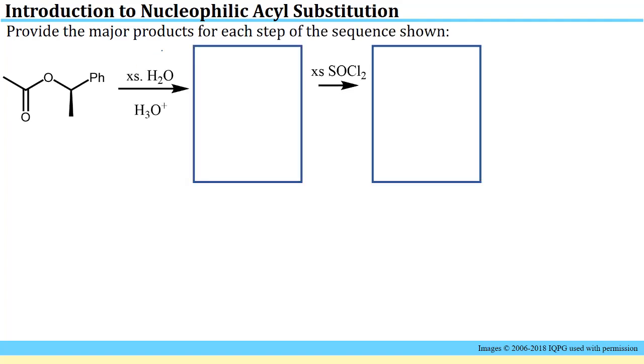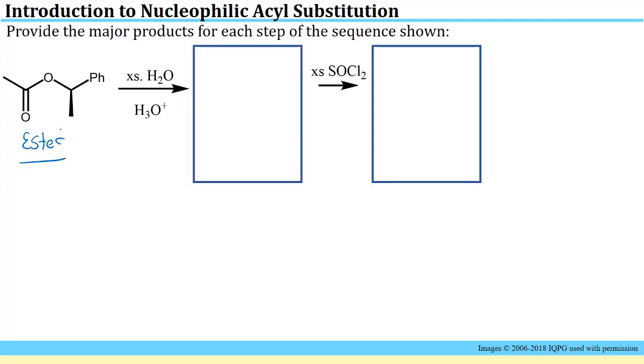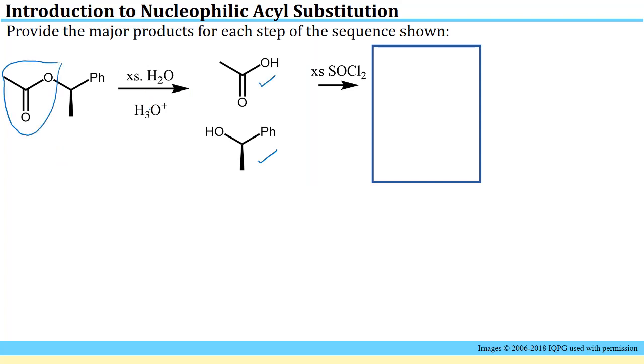Here's another type of problem, a multi-step problem asking you to provide the major products for each step of the sequence shown. If we look back at our previous problem, we formed an ester from a carboxylic acid, but remember these reactions are reversible. So if you take an ester with an excess of water, you'll push the reaction back to the carboxylic acid and the alcohol. Here's the alcohol we form, and here's the carboxylic acid which came from this piece after you pick up a proton to go in that oxygen from the acidic media.